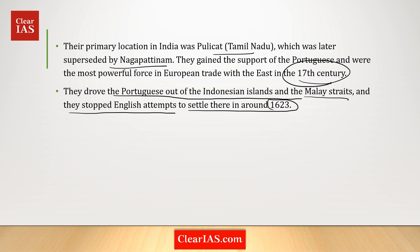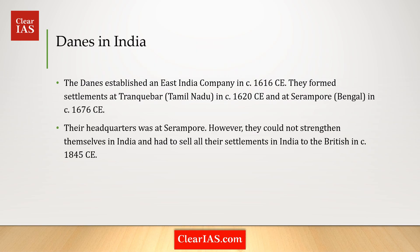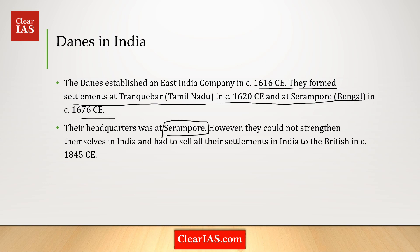The Danes established an East India Company in 1616 CE. They set up settlements at Tranquebar in Tamil Nadu in 1620 CE and at Serampore, Bengal in 1676 CE. Their headquarters were at Serampore, but they could not strengthen themselves in India and had to sell all their settlements to the British in 1845.